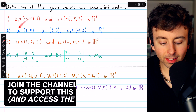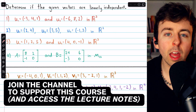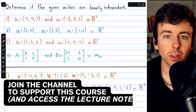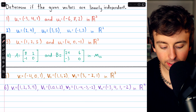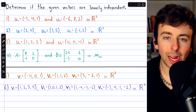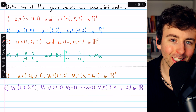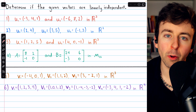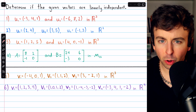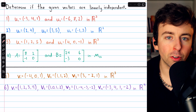We're going to solve six examples of determining if a set of vectors is linearly independent. The first four we can do by inspection — we'll basically just look and be able to figure it out. The last two will require a little bit more linear algebra.